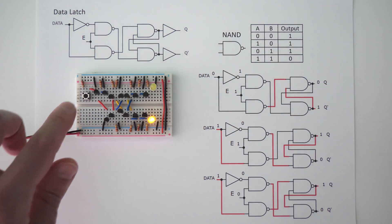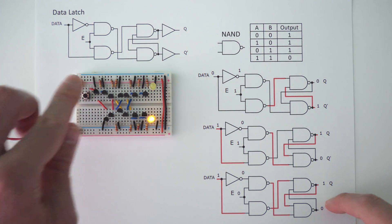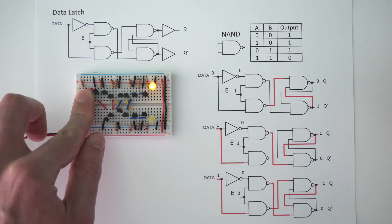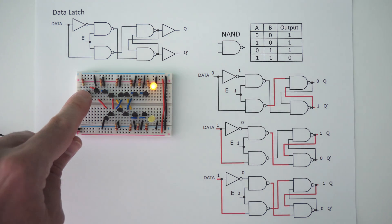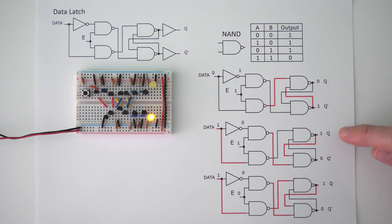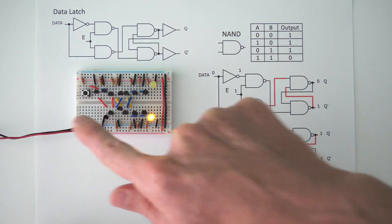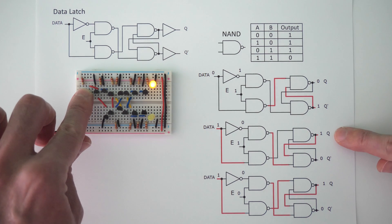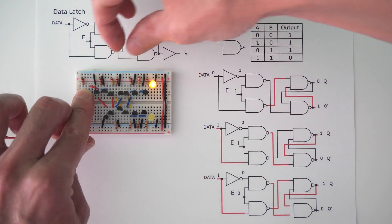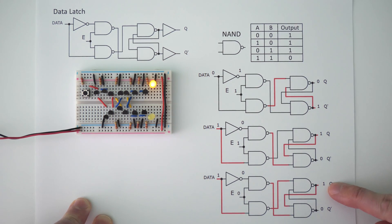Now let's look at how this data latch works. Whenever I press the button, the output turns on, and whenever I release the button, the output turns off — so it doesn't really latch, because the enable pin is constantly on. If I press this button and then remove the enable pin so it's off and then release it, now you can see that it actually latches on. If I press this button now, it doesn't matter — the output stays on. These circuit diagrams show those three example cases: the top one is the current state where the input is zero, so the output is off and the inverted output is on; if we press the button, the output is on and the inverted output is off; and if while pressing we pull out the enable pin so the enable is off, it locks in that state because the output of both NAND gates is on and the output can no longer switch states.